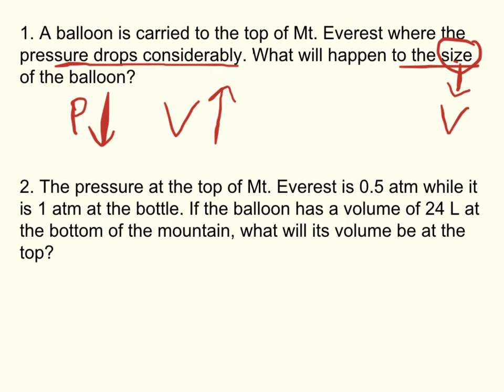That would be the answer to number one, qualitatively. Number two is quantitative, using numbers. The pressure at the top of Mount Everest is 0.5 atm, while it is 1 atm at the bottom. If the balloon has a volume of 24 liters at the bottom of the mountain, what will its volume be at the top?